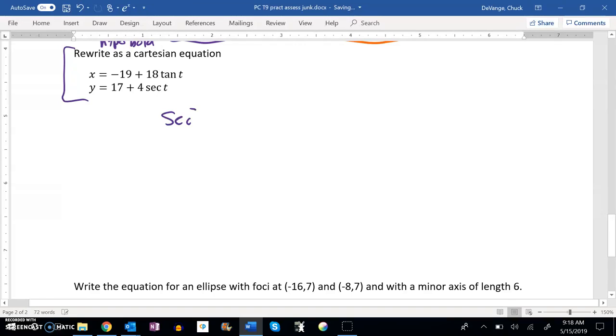I know that secant squared minus tangent squared equals 1. If I can't remember that, I can remember that cosine squared plus sine squared equals 1, and get there by dividing everything by cosine squared.